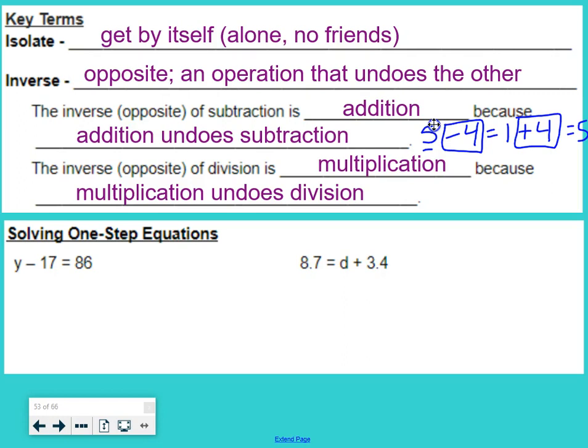The inverse, or opposite of division, is multiplication, because multiplication undoes division. So when we solve an equation, we have to undo the operations.